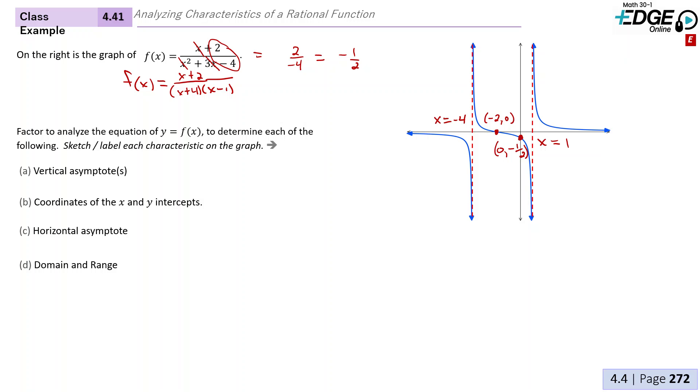Now our horizontal asymptote. We can see from the graph that we have a higher degree in the denominator than in the numerator. So we're going to have a horizontal asymptote at y = 0.